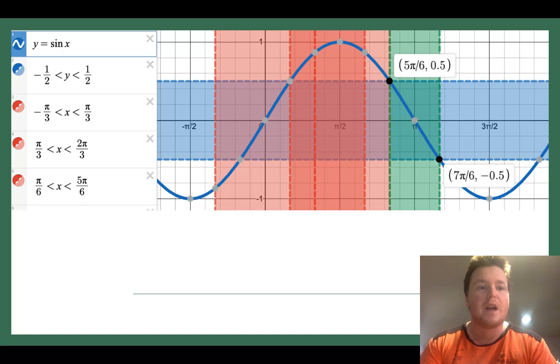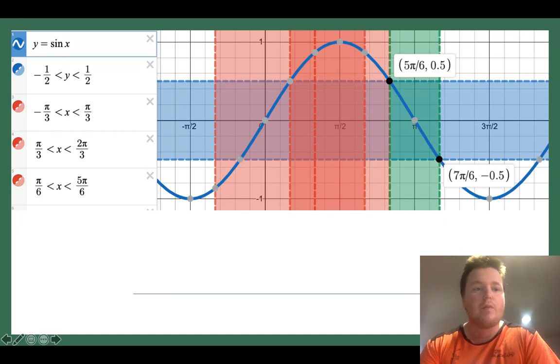So here is the answer, the three options that were given in the question, the first three are all wrong. Between 5 pi over 6 and 7 pi over 6, the fourth option that they gave is correct, because the sine graph is in between minus 1 half and 1 half at that time. So the answer is D.